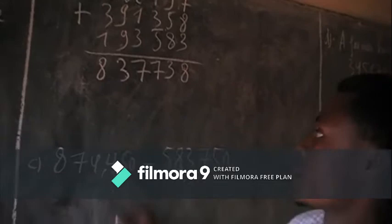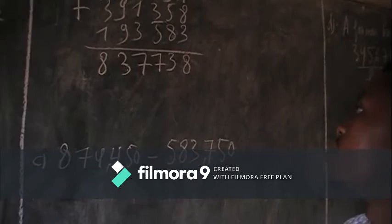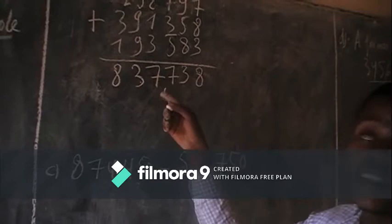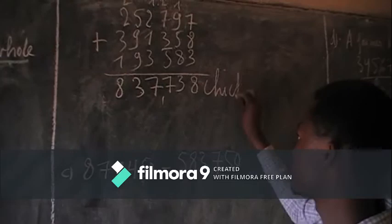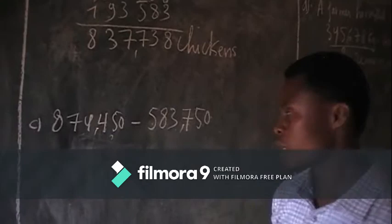So it means that in 3 years this farmer sold 838,138 chickens.